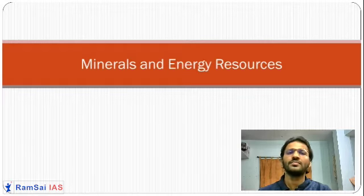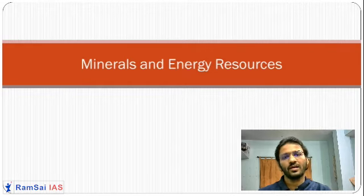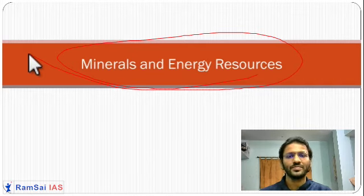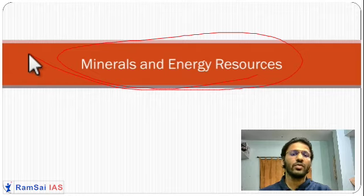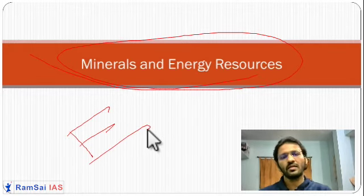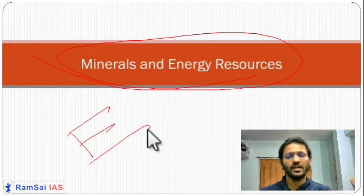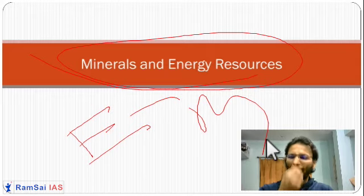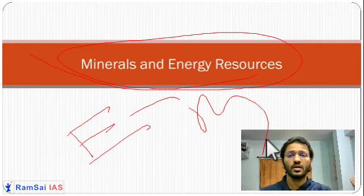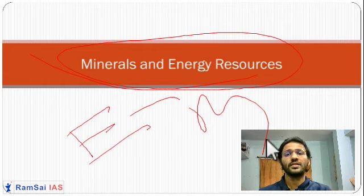Good evening friends. Today we start with the next chapter: minerals and energy resources. This chapter appears in NCERT standards from class six to ten. When we say minerals, we mean combinations of a few elements — like iron or copper — where two or three elements come together in certain quantities. Depending on which element has the highest percentage in the composition, we call that region a deposit of that particular mineral.